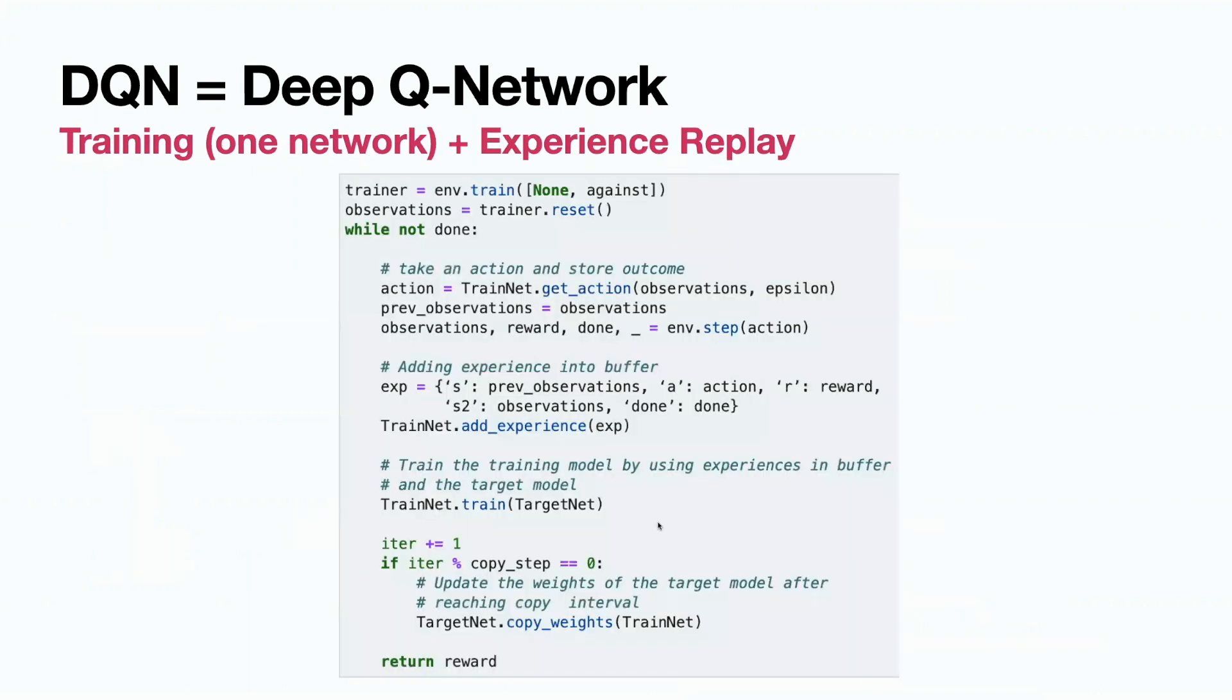Here is the code for training one network DQN with experience replay. We instantiate environment here, pick initial observation, and then we iterate until done, until the end of episode. Epsilon is a coefficient for exploration. Epsilon is a chance to take random action instead of predicted action, to explore the space of actions and states more. We are writing down the observation into previous observation because now we wanted to make a step.